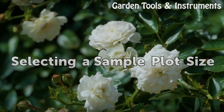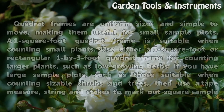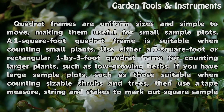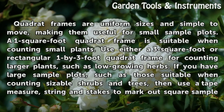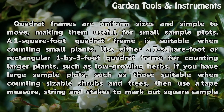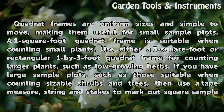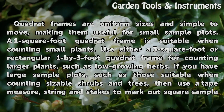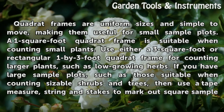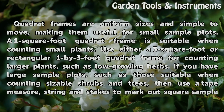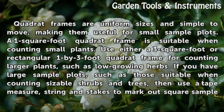Selecting a sample plot size. Quadrat frames are uniform sizes and simple to move, making them useful for small sample plots. A 1 square foot quadrat frame is suitable when counting small plants. Use either a 3 square foot or rectangular 1 by 3 foot quadrat frame for counting larger plants, such as low growing herbs.